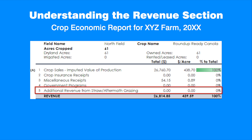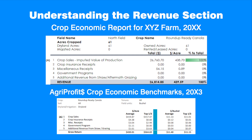In this example, the straw was not baled and there wasn't any aftermath grazing on the field, so the corresponding revenue is zero. One way to assess performance is to compare the results with the corresponding AgriProfits crop benchmarks published every year. The AgriProfits benchmark for a canola crop in the black soil zone indicates average crop sales at $419.87 per acre, with the top third of producers averaging $557.47 per acre. This producer's crop sales revenue is $438.70 per acre, 4% higher than the benchmark.